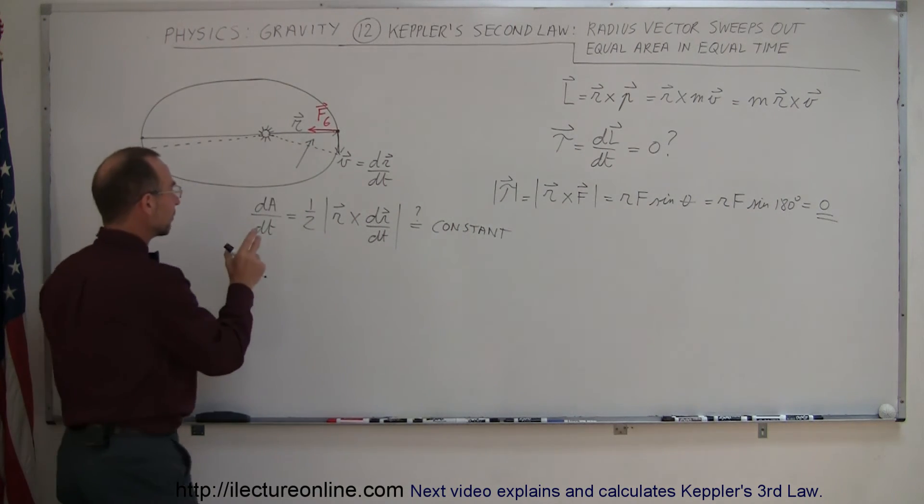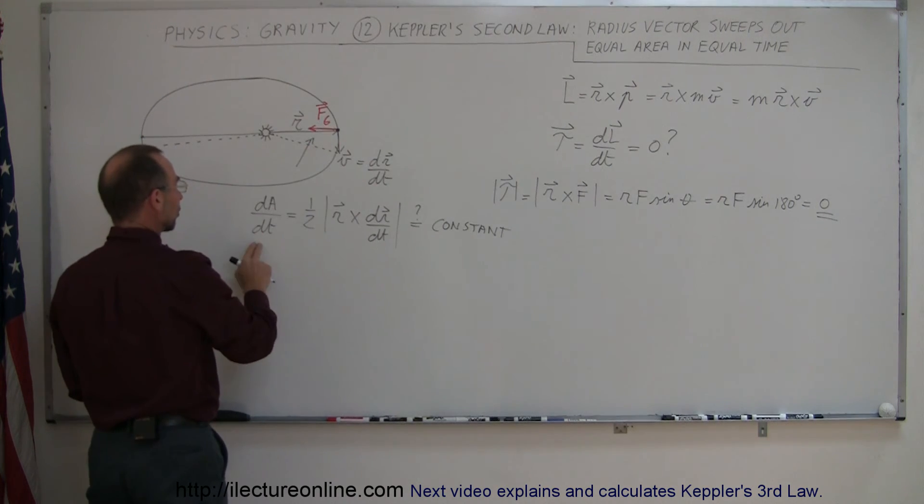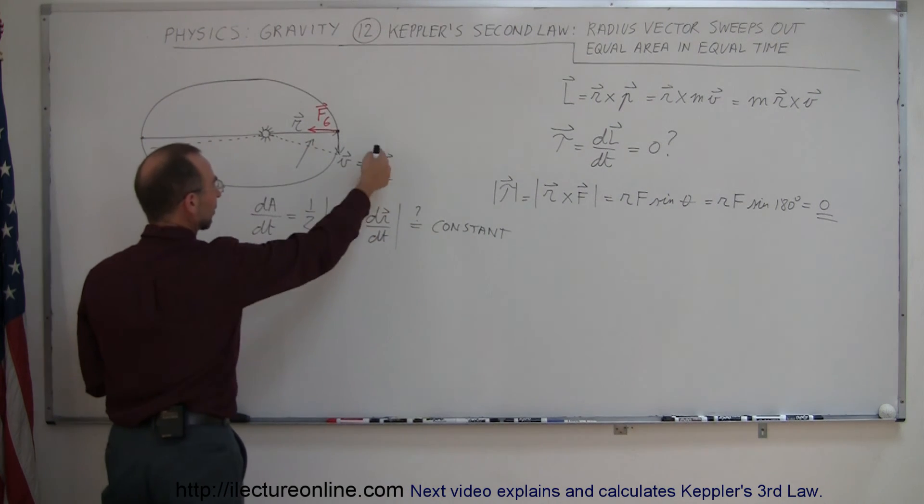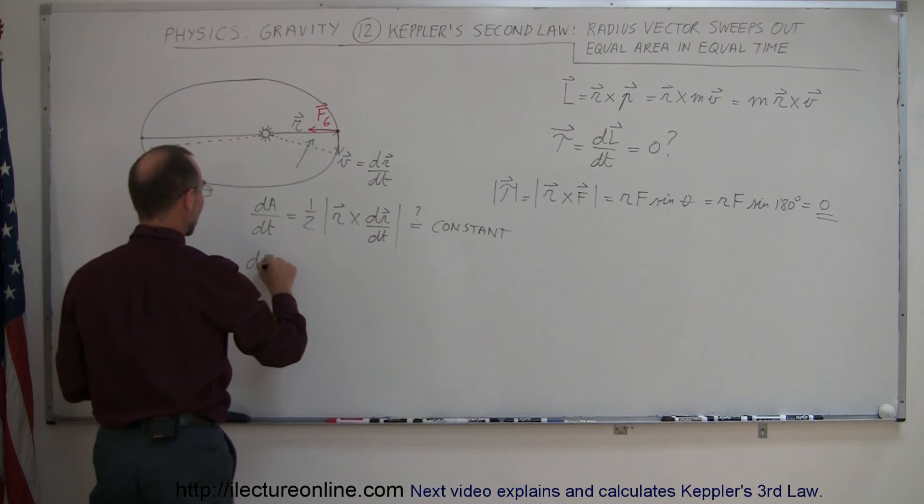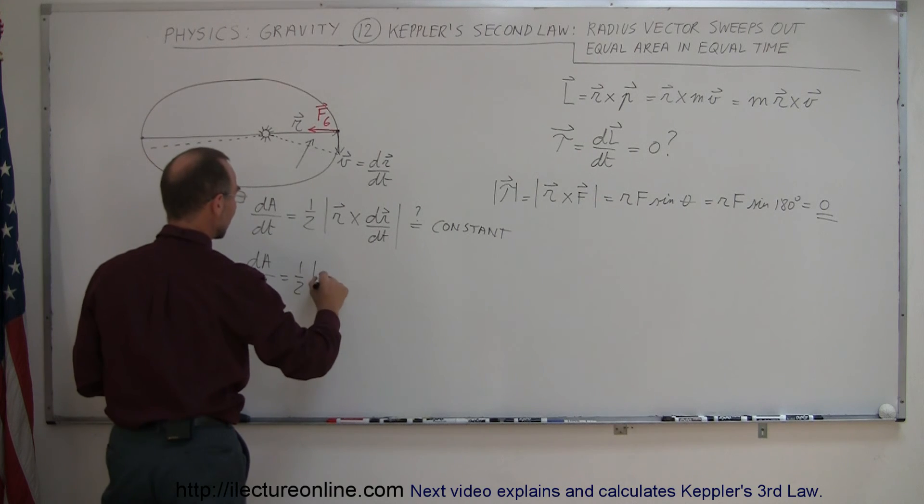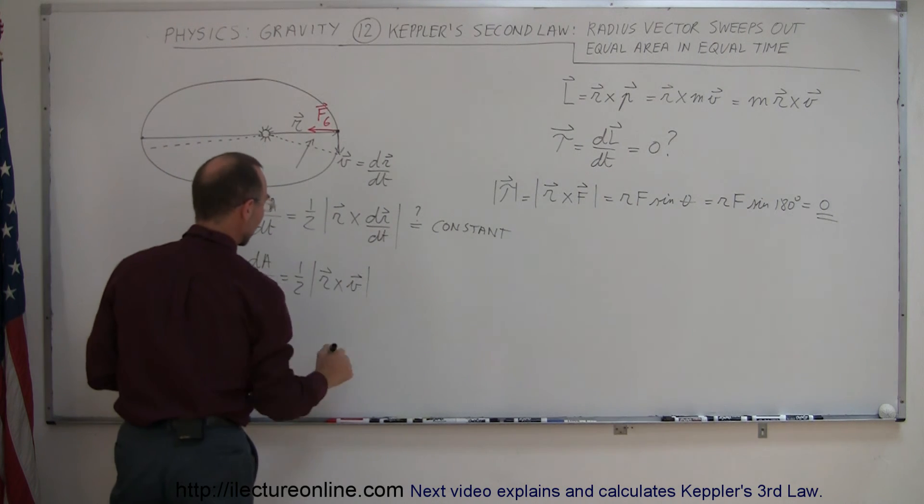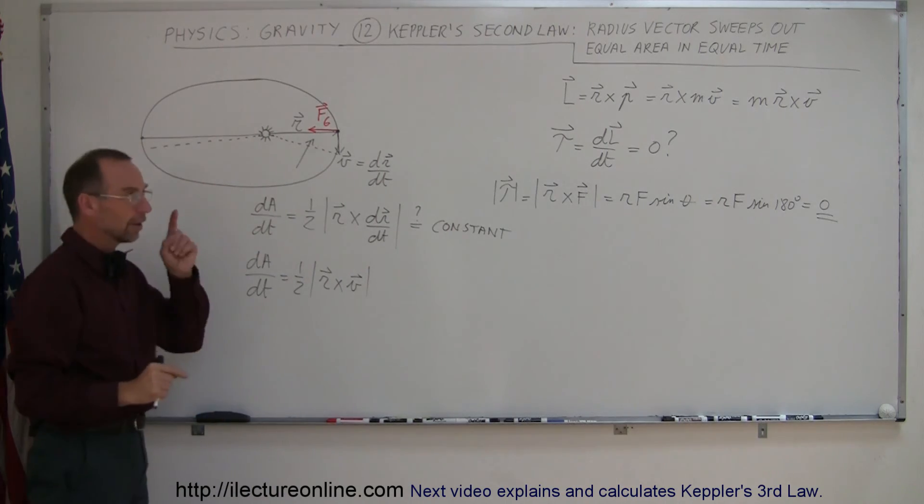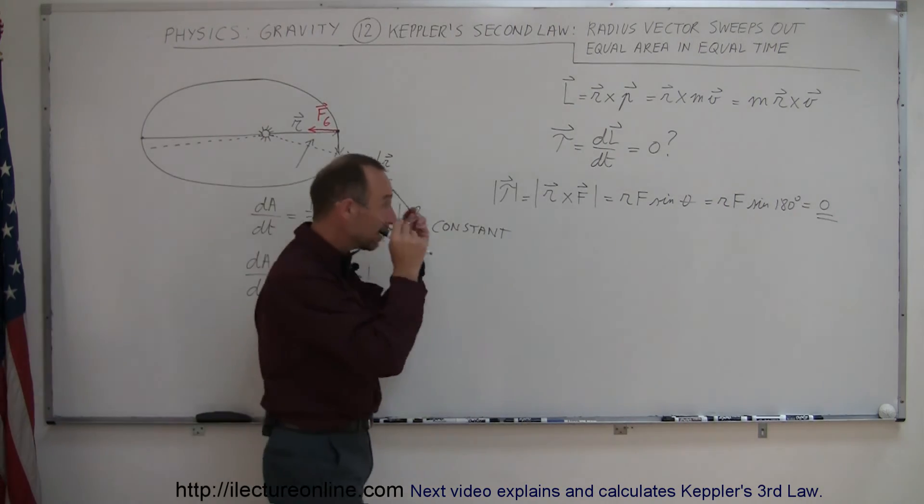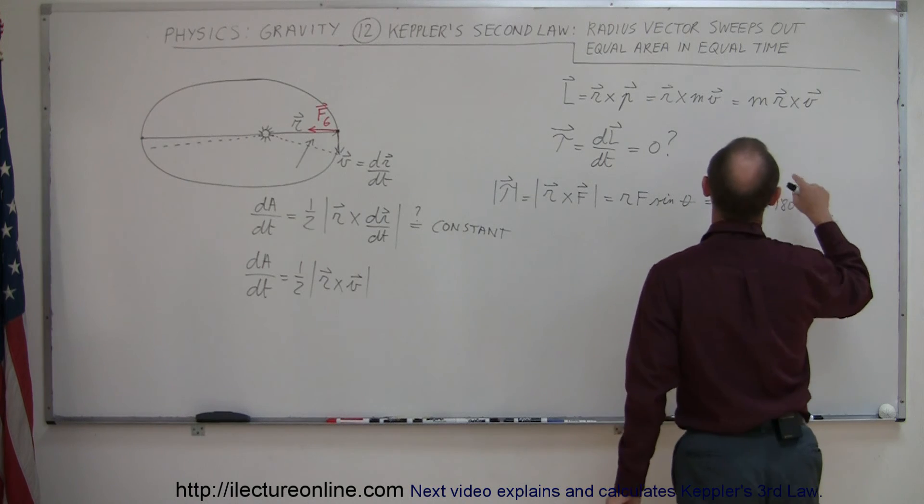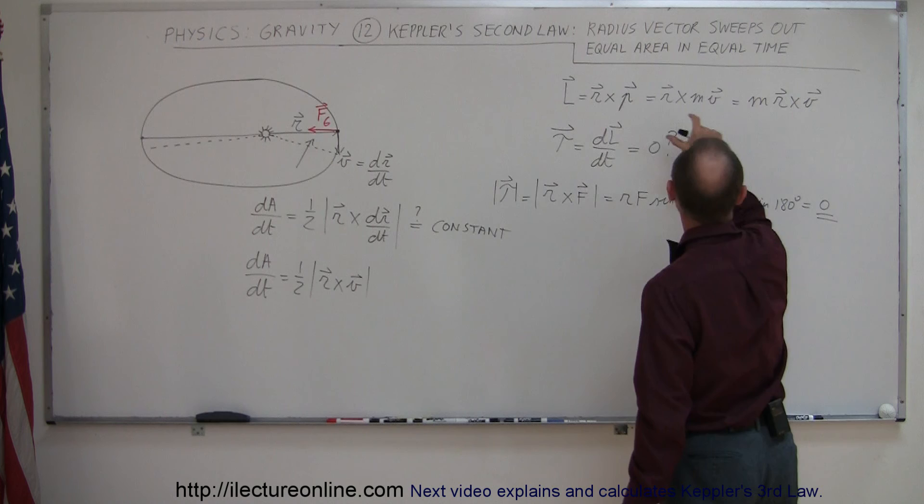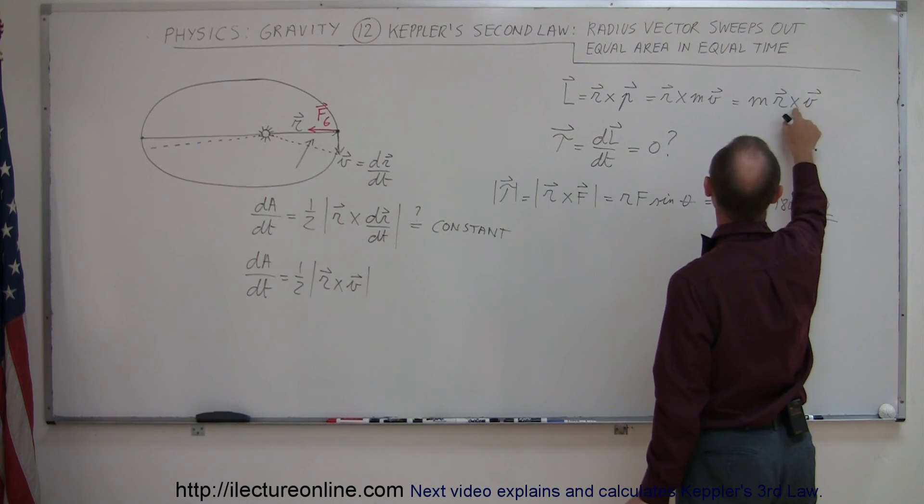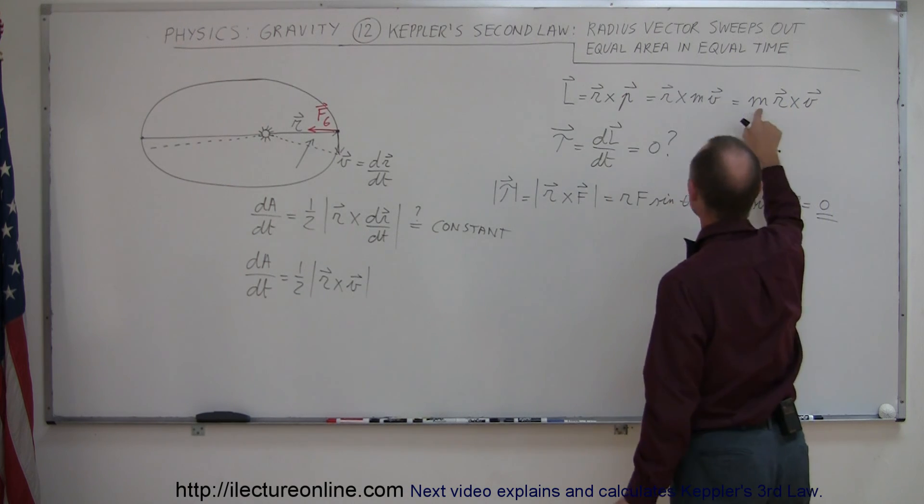Alright, so if the area swept out in a certain amount of time is equal to this, and realizing that dr dt is equal to v, I can replace this quantity here by v. So I can say that the amount of area swept out per unit time is equal to one half times the value of r cross v. Now I've seen this before somewhere on the other side of the board. So if I can go over here and say r cross v times m is equal to the angular momentum.